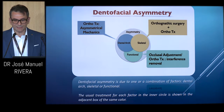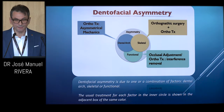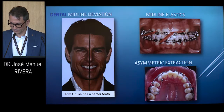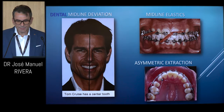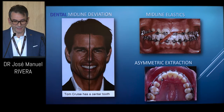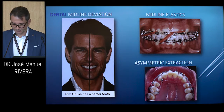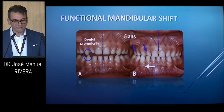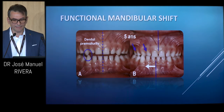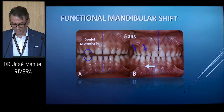Dental facial asymmetry is due to one or a combination of factors — it can be dental, skeletal, or functional. For asymmetry due to dental problems, we can either use elastics for mild cases or do asymmetric extraction for severe cases. For functional types of mandibular shift, occlusal prematurities causing the mandible to shift can be treated by selective grinding or orthodontic treatment.